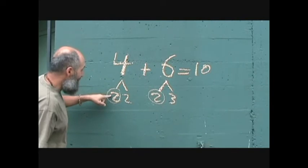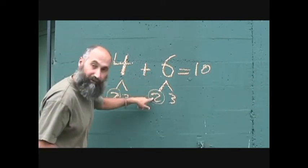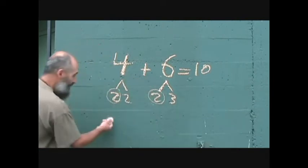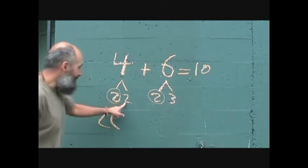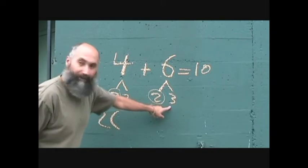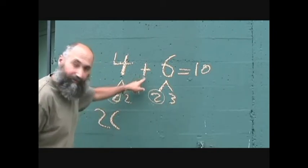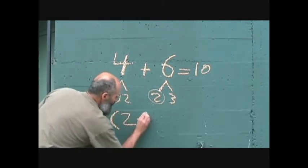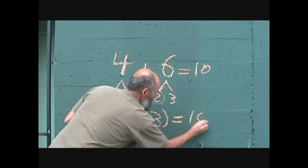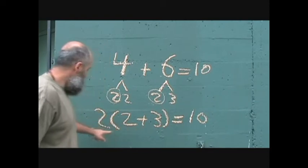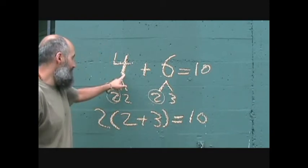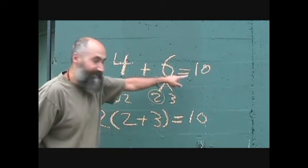So what you can do is take out a 2 from this, and if you take out a 2 from this, you can take out a 2 from this. And when you take it out, it comes to the front of the equation. So that becomes 2. What's left here is 2 and a 3, and they're added together. So what you do is you go 2 times, parentheses, 2 plus 3, equals 10. So 2 plus 3 is 5 times 2 is 10. That's the same thing as 4 plus 6 is 10.